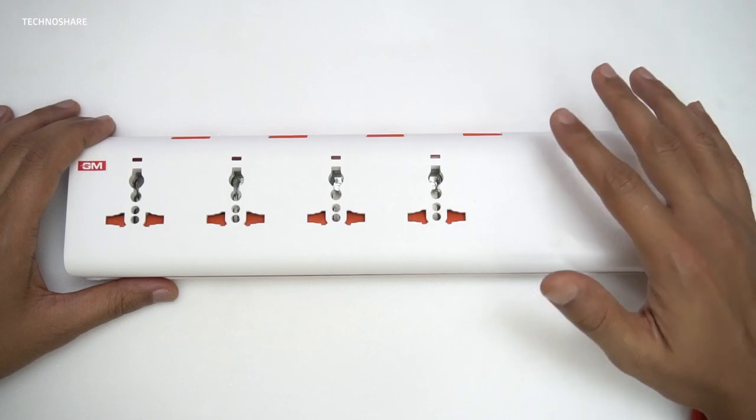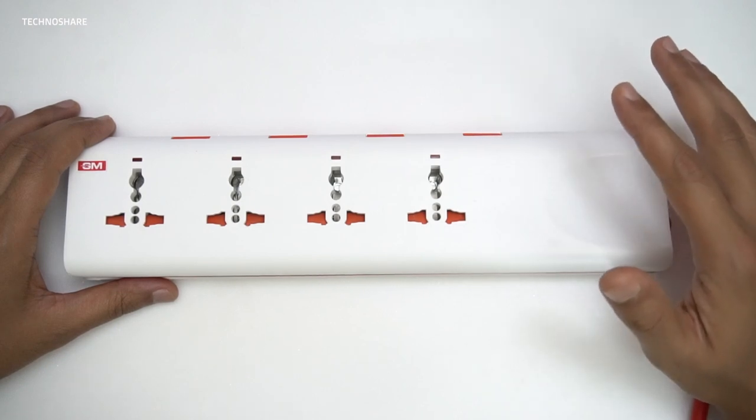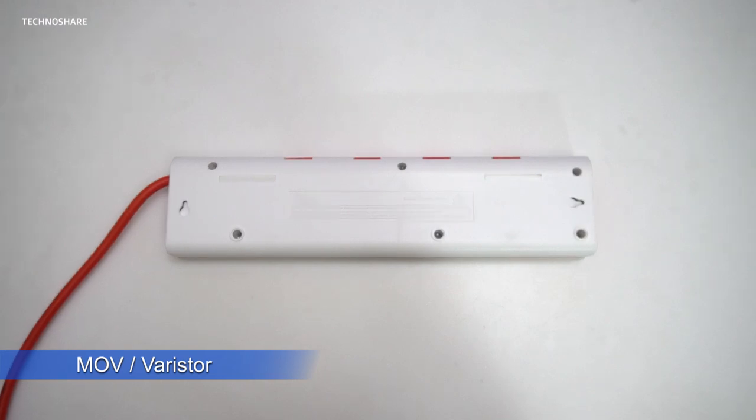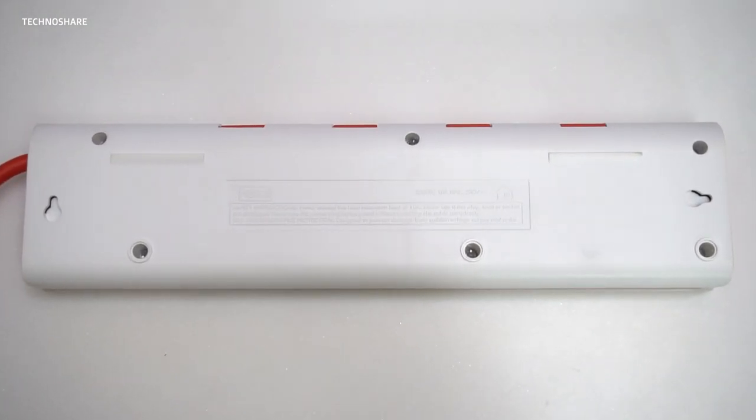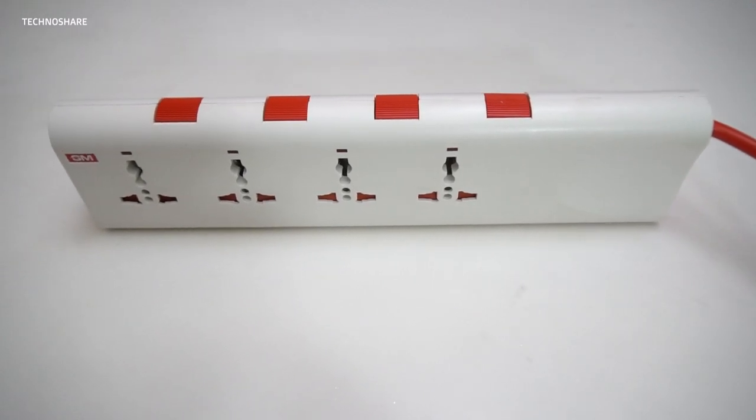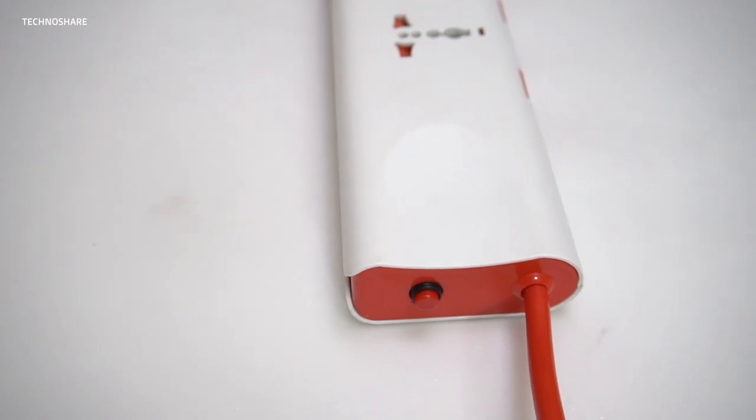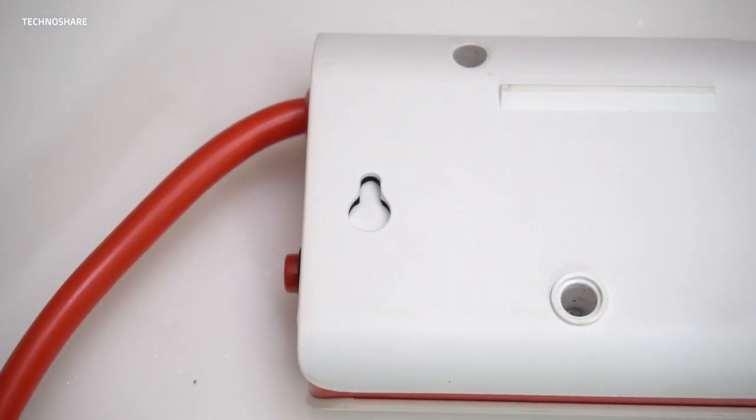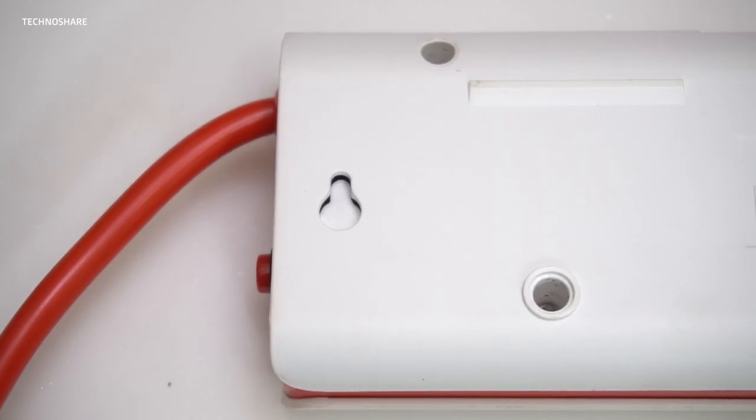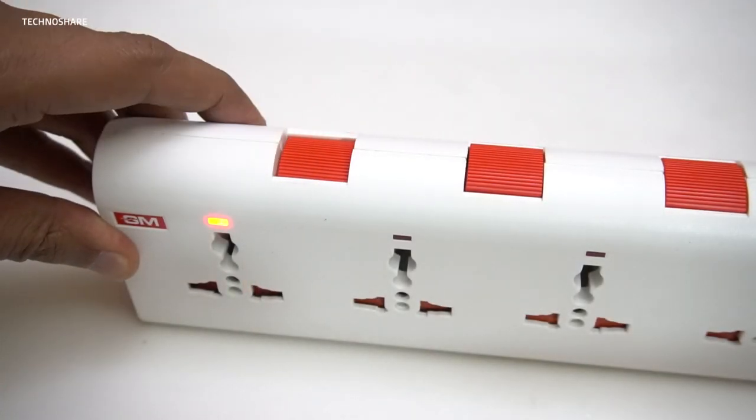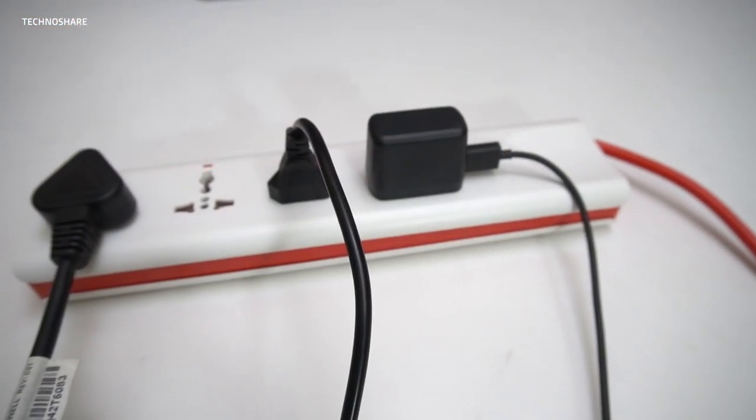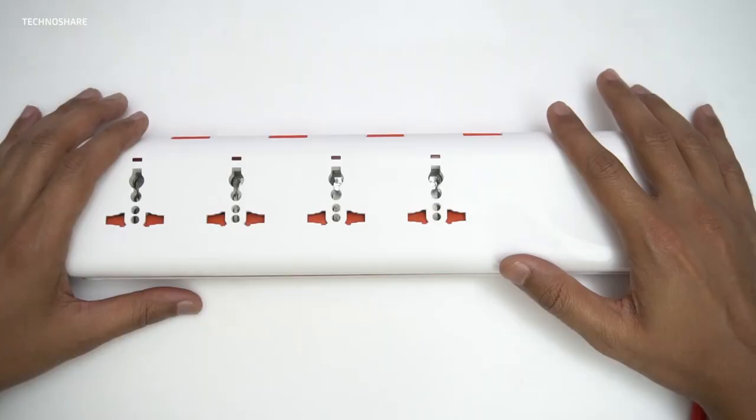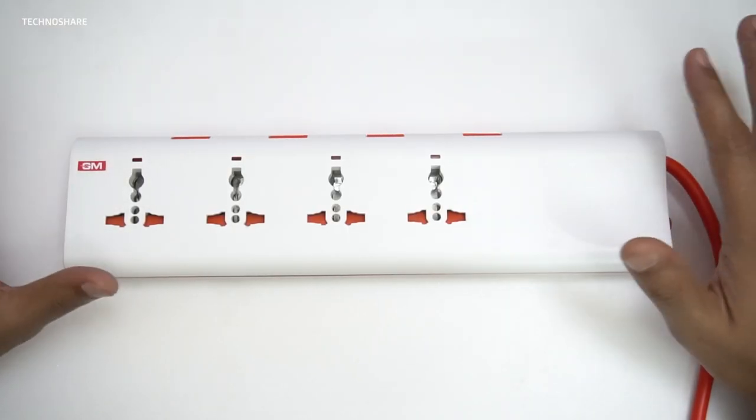Lastly, this spike guard has three high power MOVs or metal oxide varistors. A varistor is a short form of variable resistor - this is an electronic component that is voltage dependent. It has a property where its resistance will decrease when the supplied voltage increases. As a result, the potentially destructive energy of the incoming surge or spikes is absorbed by the varistor and this protects the connected appliances. So that was it on this spike adapter.